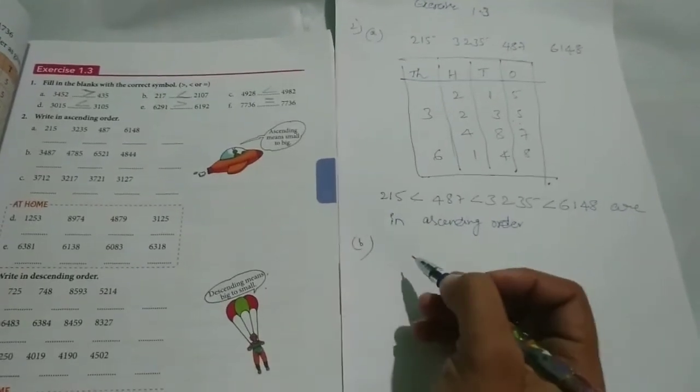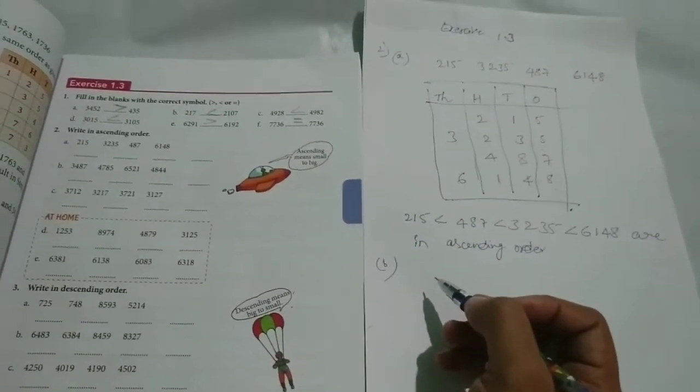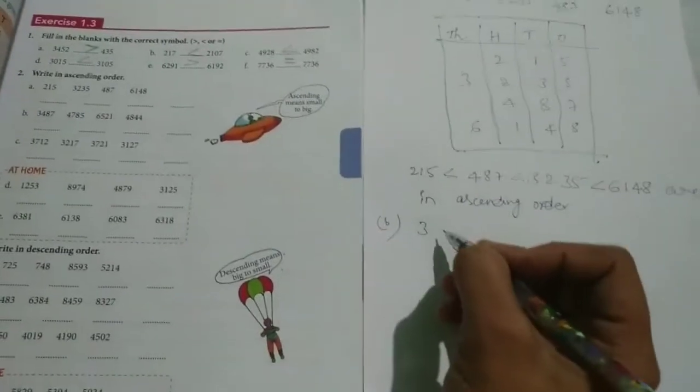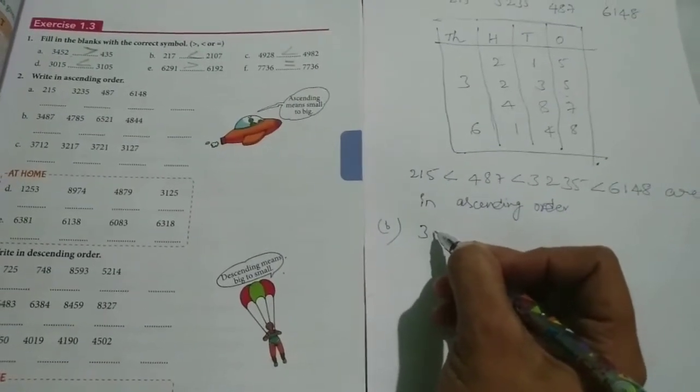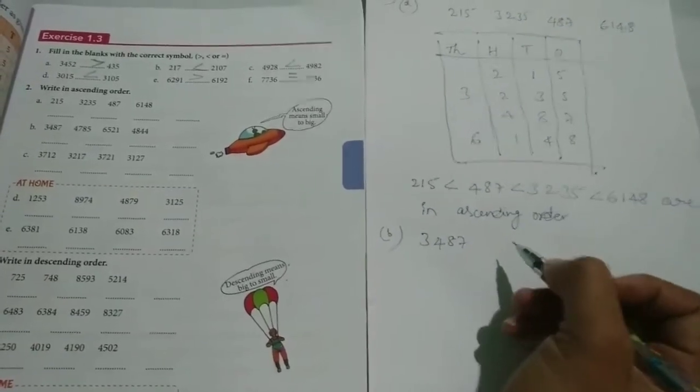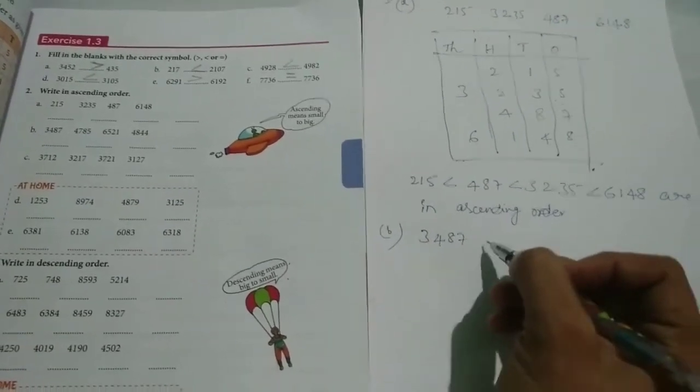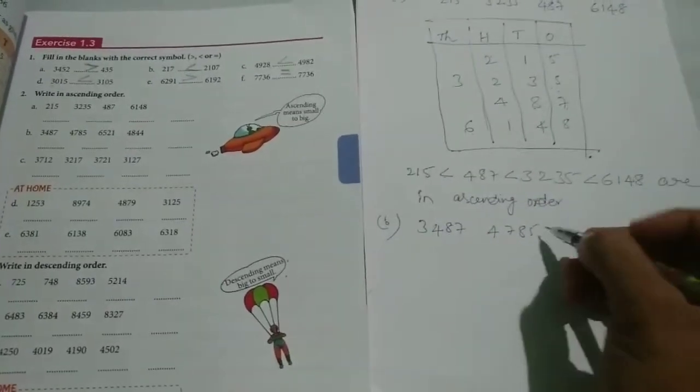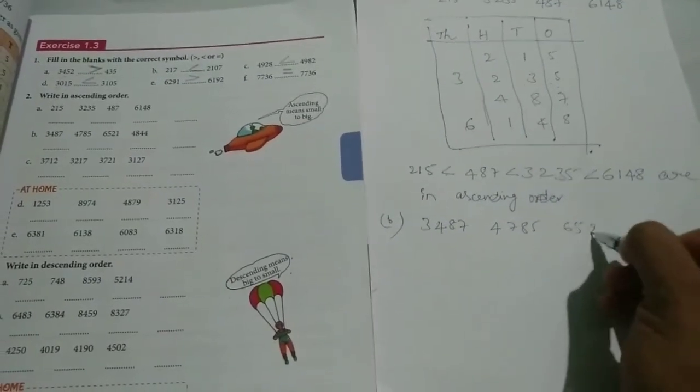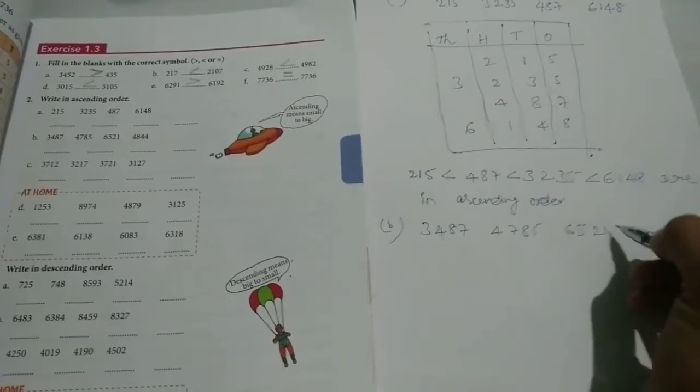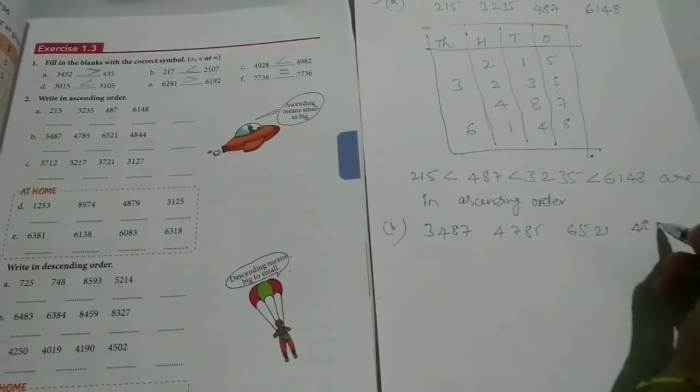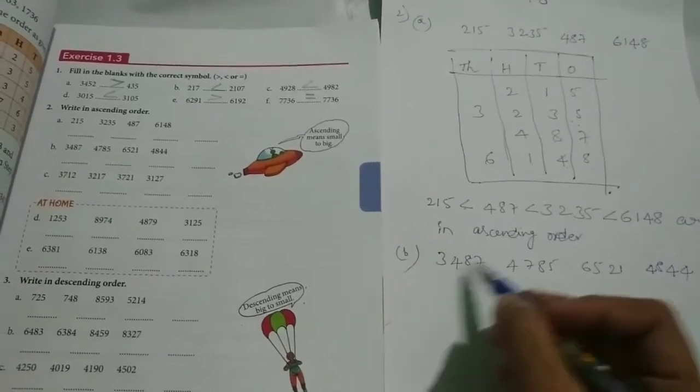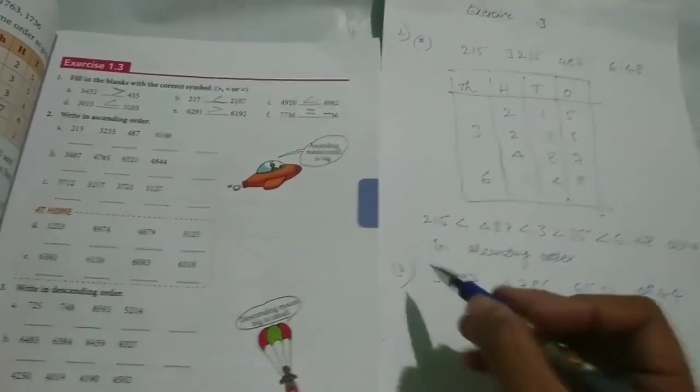Next one, B. See here: 3, 4, 8, 7. And 4, 7, 8, 5. Next: 6, 5, 2, 1. 4, 8, 4, 4. So for this also you have to prepare the chart.